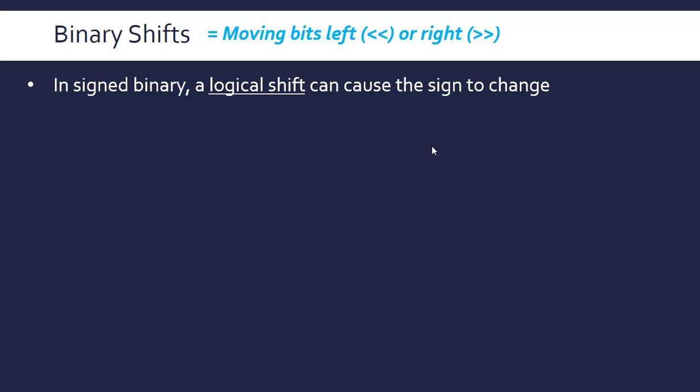that in signed binary, a logical shift can cause the sign bit to change. It can go from a positive number to a negative number just because a one is shifted into that position or shifted out of it, depending on which side.